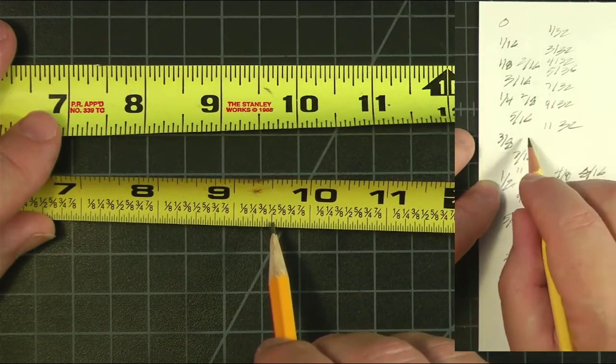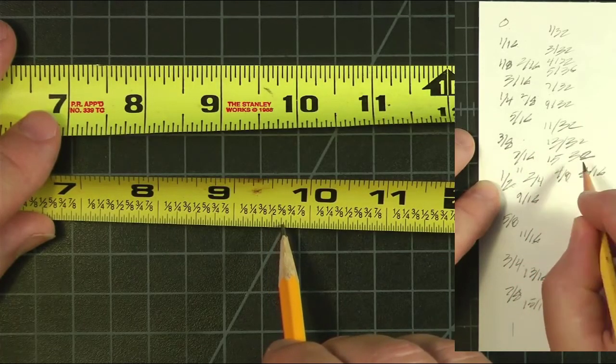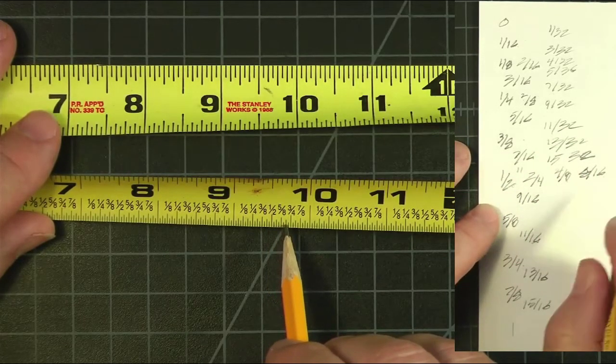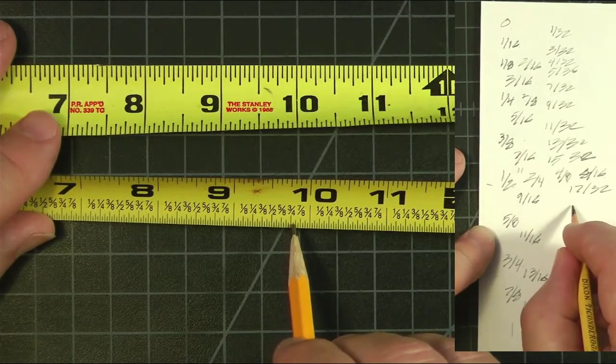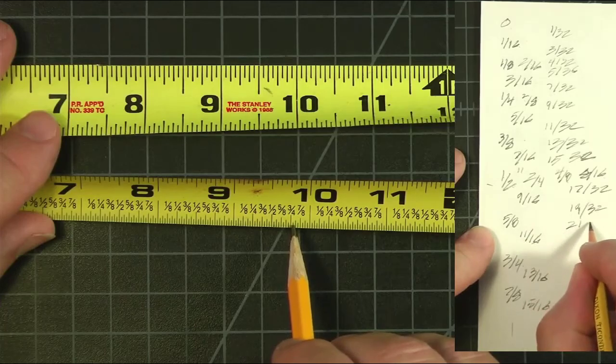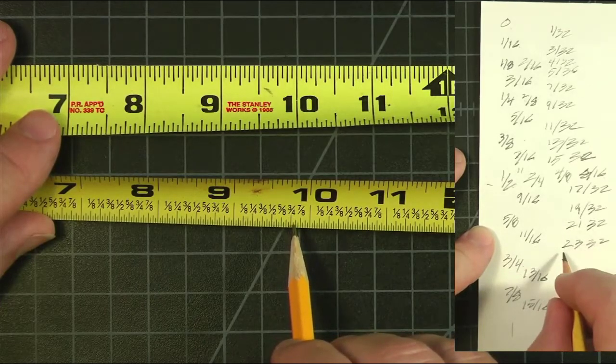Where was I? 16, 17/32, 18, 19, 20, 21, 22, 23, 24, 25. Have you noticed that all the shorter lines, as they get shorter, they're odd numbers?